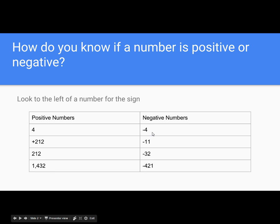On this right side, we call these a negative 4, a negative 11, negative 32, and a negative 421.